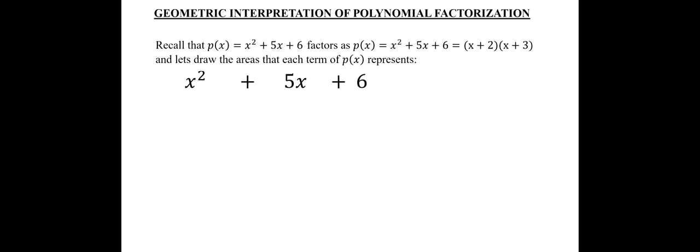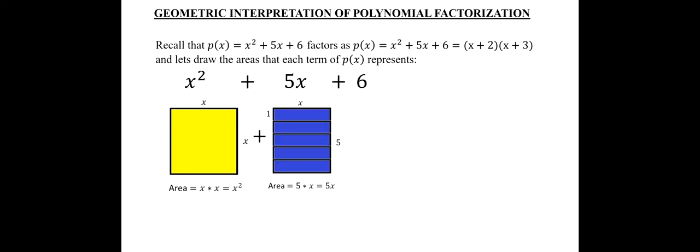If this is our polynomial, then I'm going to also color code them for the moment so you can just see them. I'm just drawing in yellow. This is an X by X square, represented by X squared. But, then I have 5X.